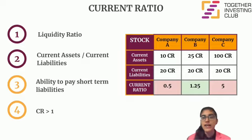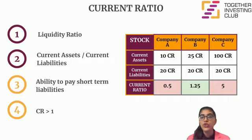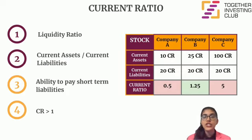For example, there are three companies — Company A, Company B, and Company C. The current assets of Company A, B, and C are 10 crore, 25 crore, and 100 crore respectively. The current liabilities are 20 crore for all three companies.